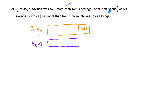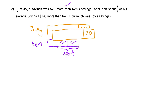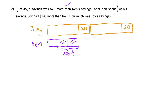Moving on: after Kent spent two-thirds of his savings. This is Kent's savings, and he's going to spend two-thirds, so we partition it into three units and he spends two of them. Then Joy had $190 more than Kent. Remember we haven't finished drawing Joy — this was only half — so we extend the model to show Joy's full savings.